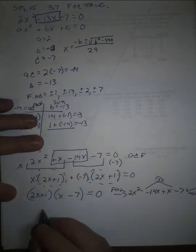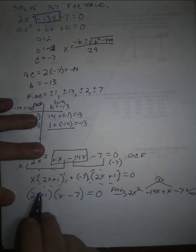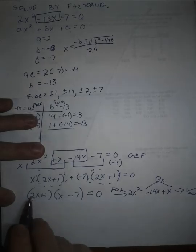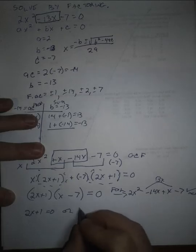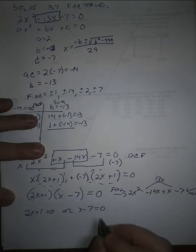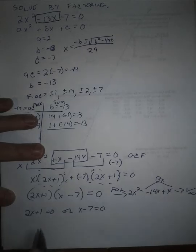At this point, we use the zero product property to say if this product is zero, then either 2x plus 1 is zero, or x minus 7 equals zero.